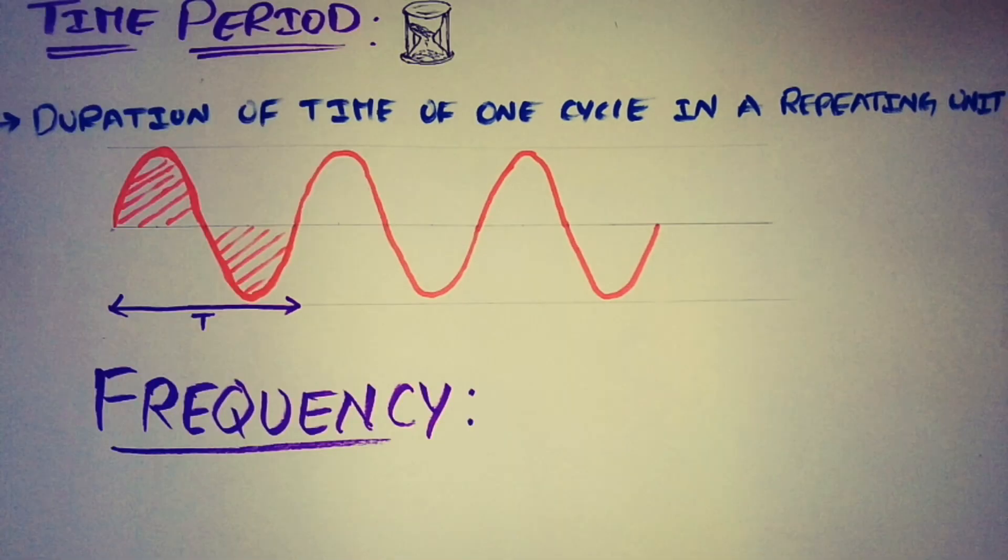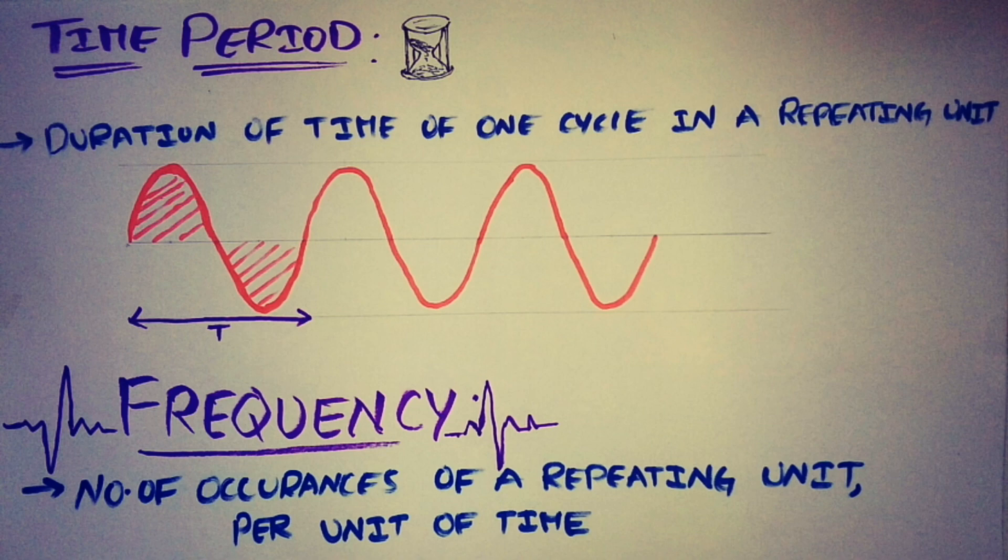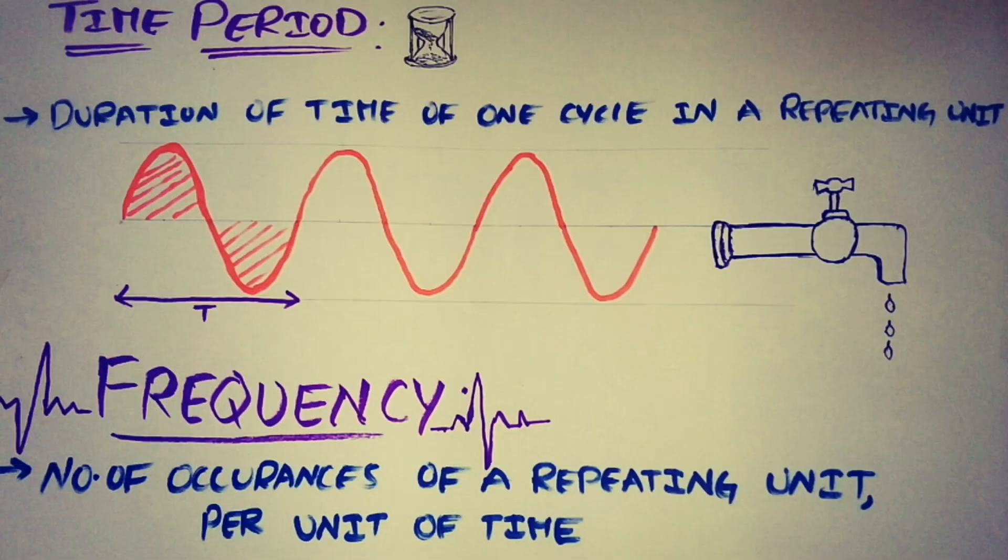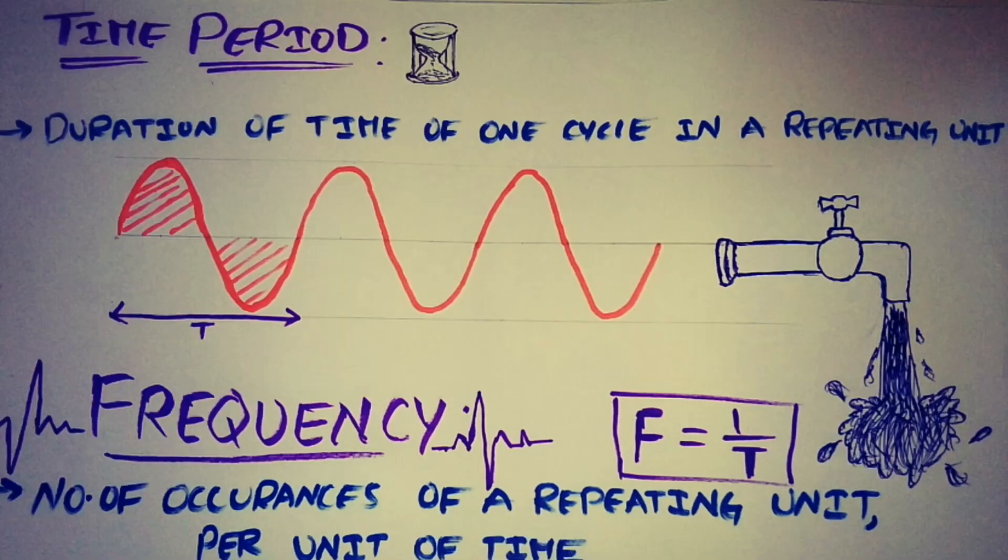Now, what is frequency? Frequency is the number of occurrences of a repeating event per unit of time. It is the number of cycles per unit of time. Thereby, from the definition we conclude frequency is inverse of time period: f equals 1 by T. The time period and frequency are well defined for a periodic signal.